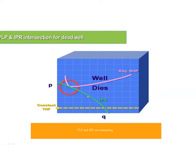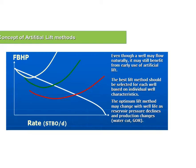What can I do to make this well produce? I have to do one of two things: either change the IPR curve — bring it up by stimulating the well — or change the position of the outflow performance curve. This is what artificial lift does: artificial lift methods change the outflow curve in order to create an intersection. By introducing artificial lift, my outflow can shift to a new curve depending on the design and type of artificial lift used.